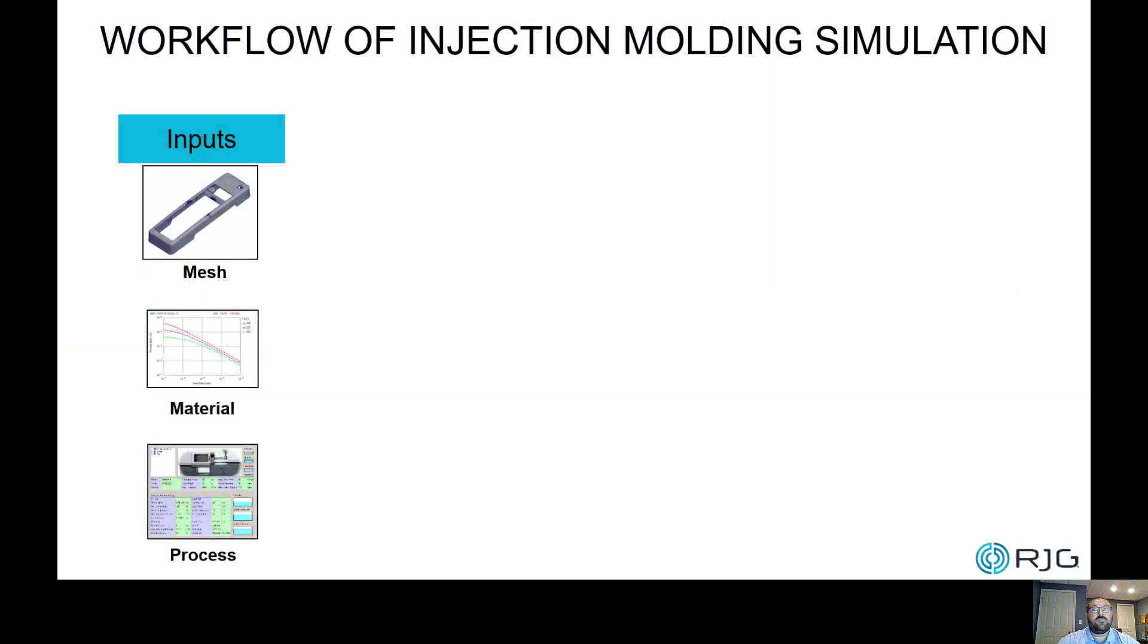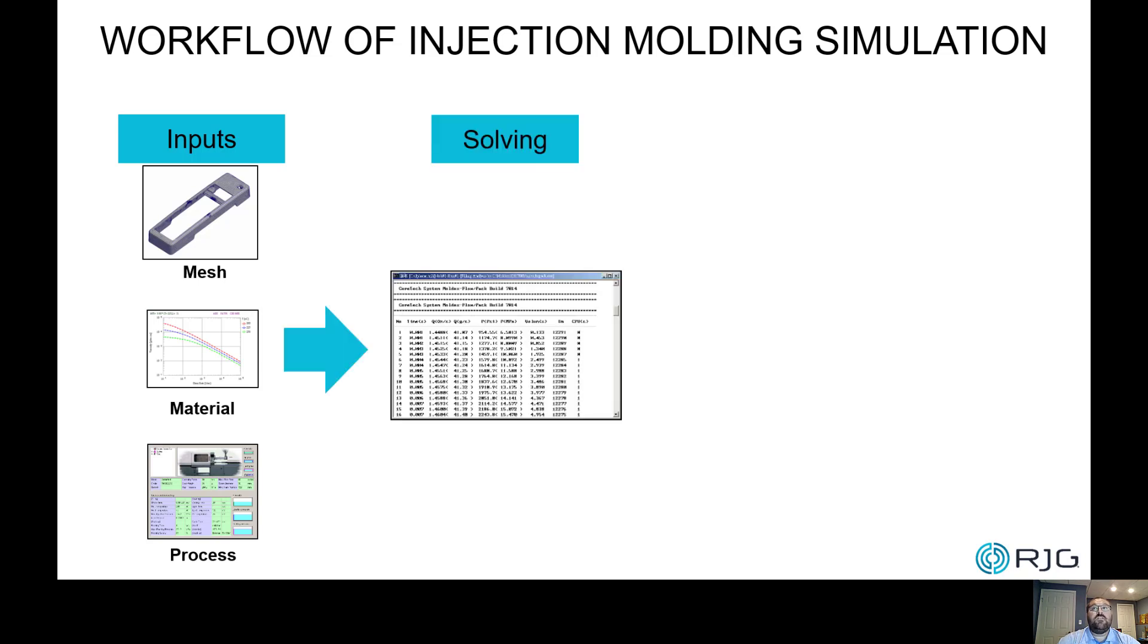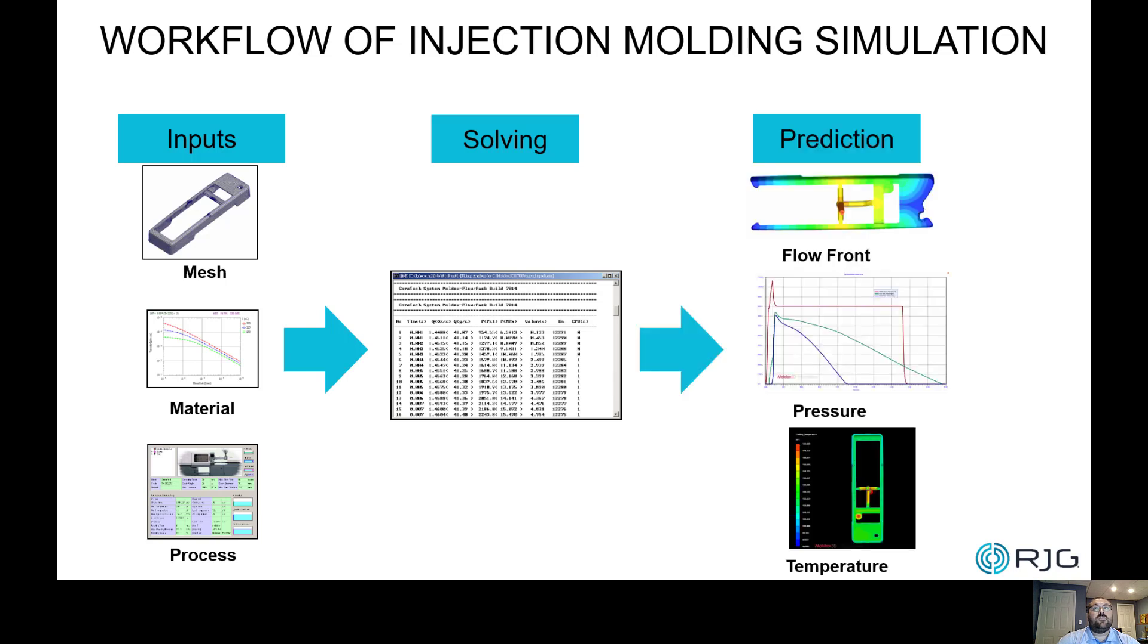Let's reiterate the analysis procedure. In simulation, there are three major input categories which users can decide and adjust freely: mesh, material, and process. Each group of inputs contain multiple variables. Then, the inputs are processed with the solvers in the middle and output the predictions.